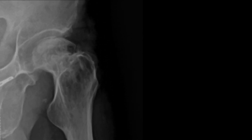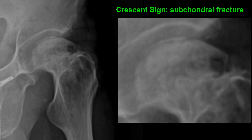Looking closely at the subarticular surface of the femoral head, you'll notice a thin curvilinear radiolucency. This represents the subchondral fracture and can be referred to as the crescent sign. When seen, it is highly indicative of avascular necrosis.